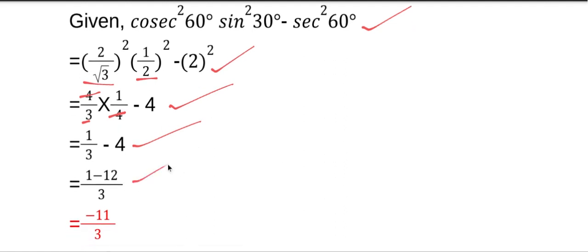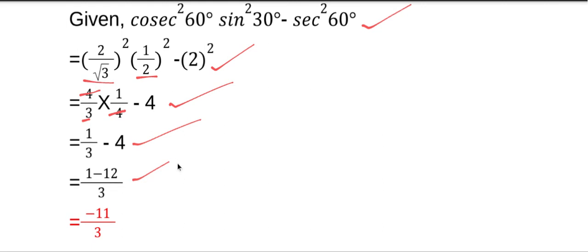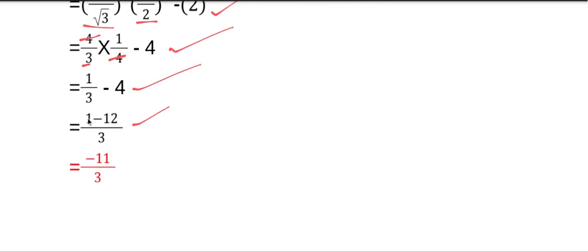Taking LCM, the LCM is 3. So (1 - 4×3)/3 = (1 - 12)/3 = -11/3. Our answer is -11/3.